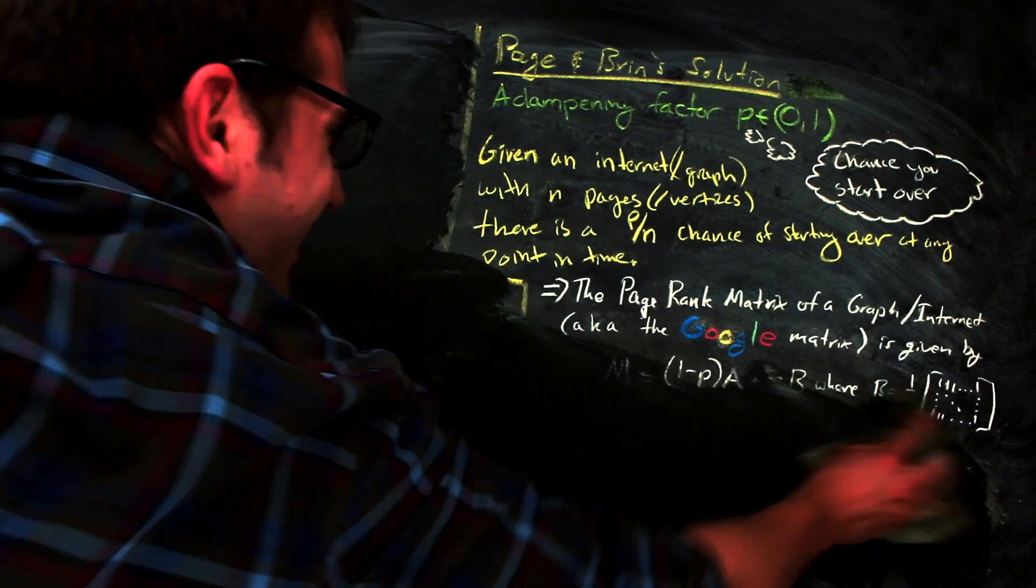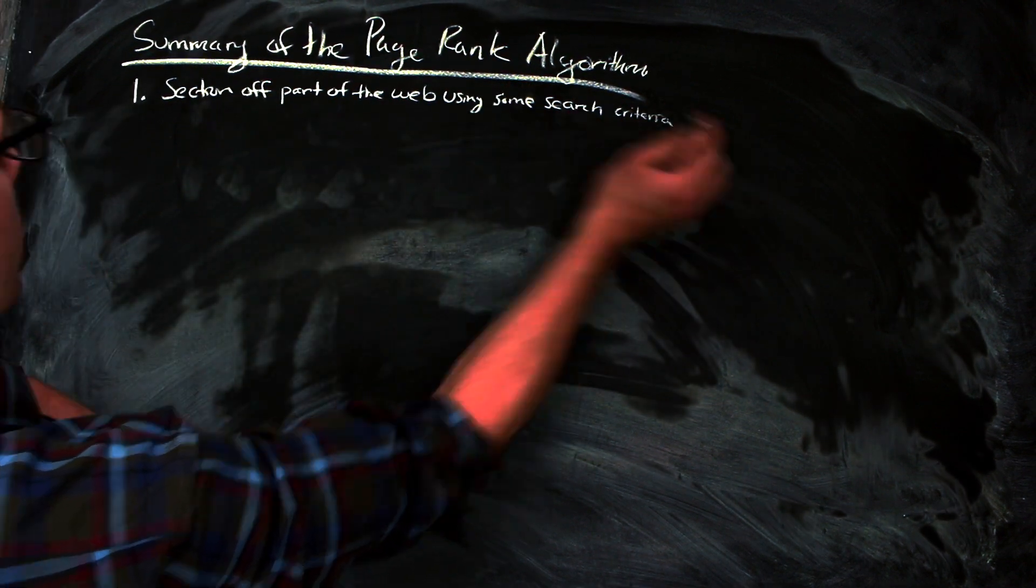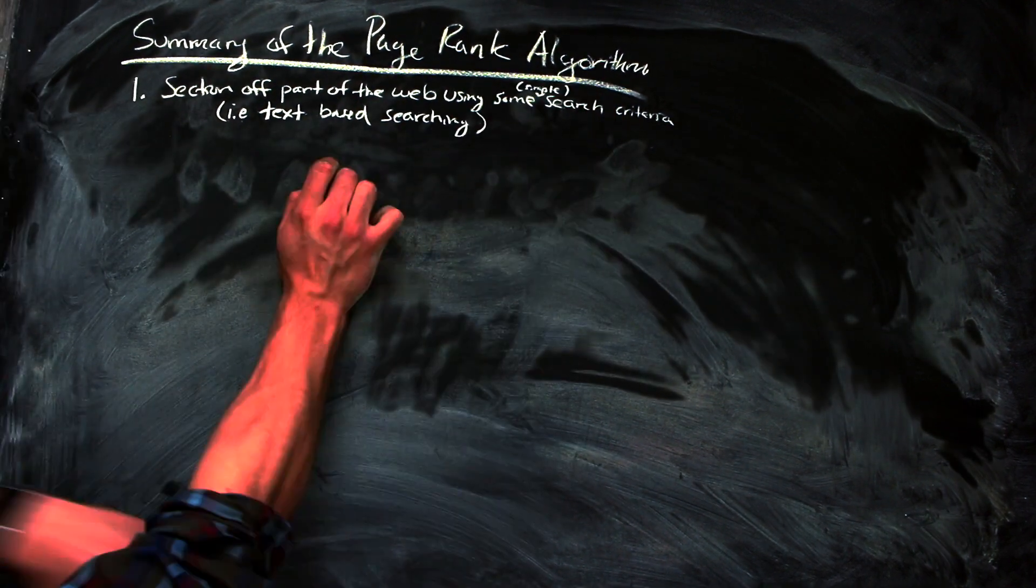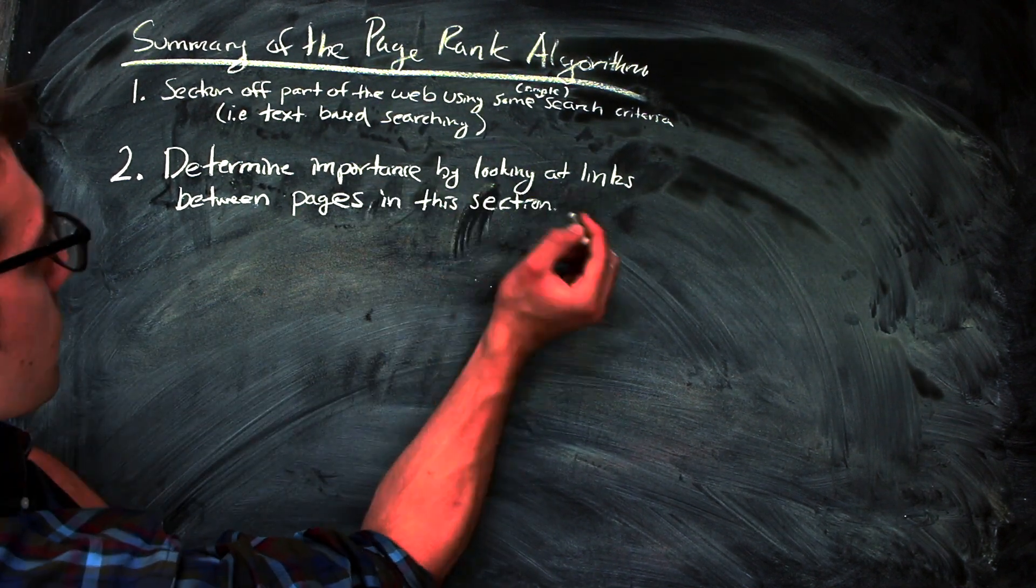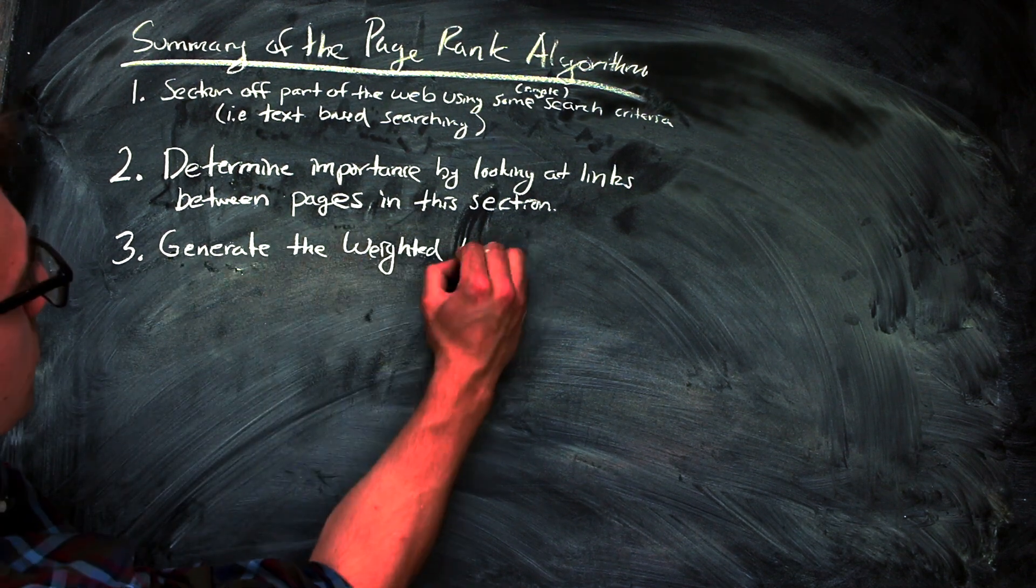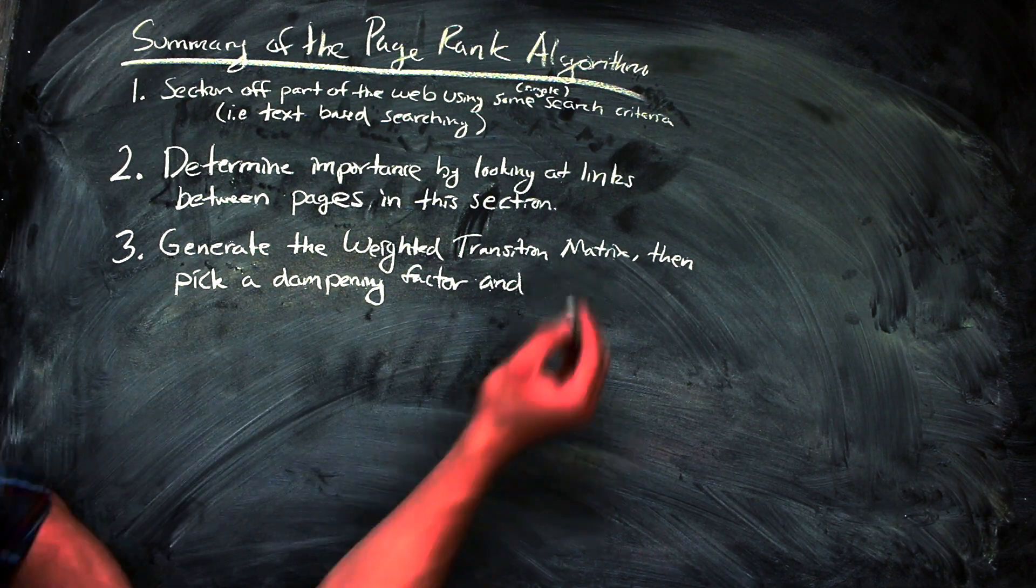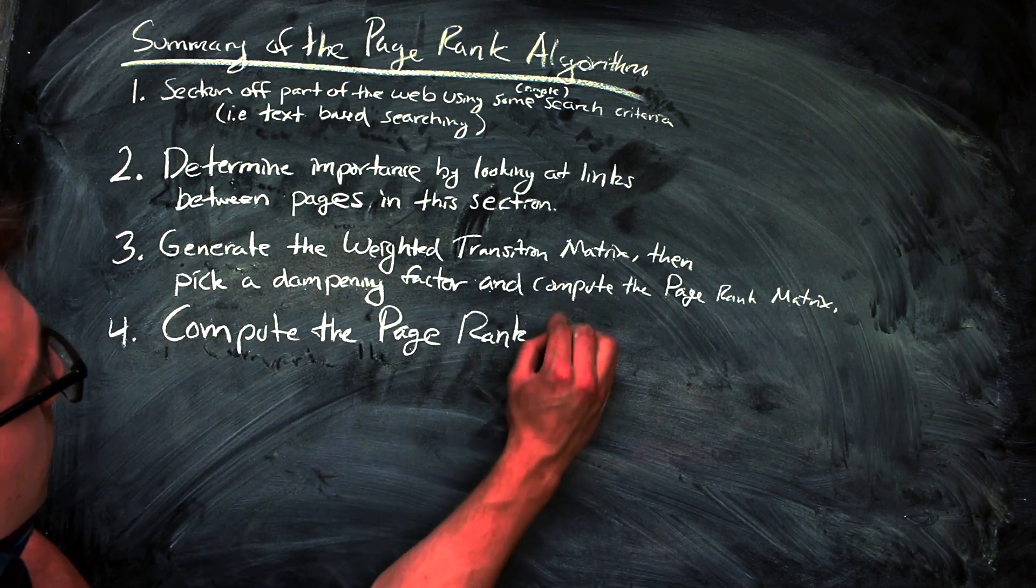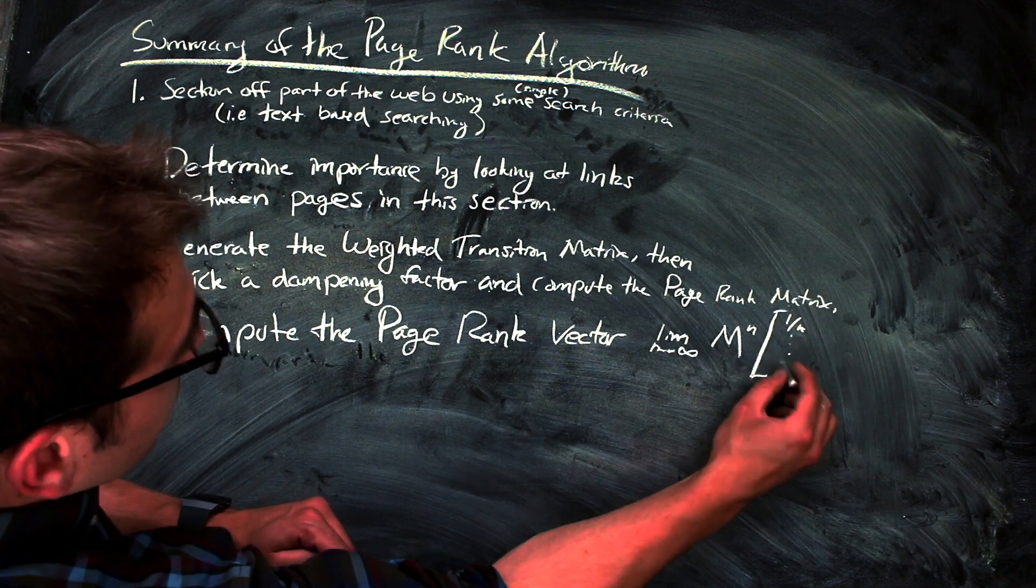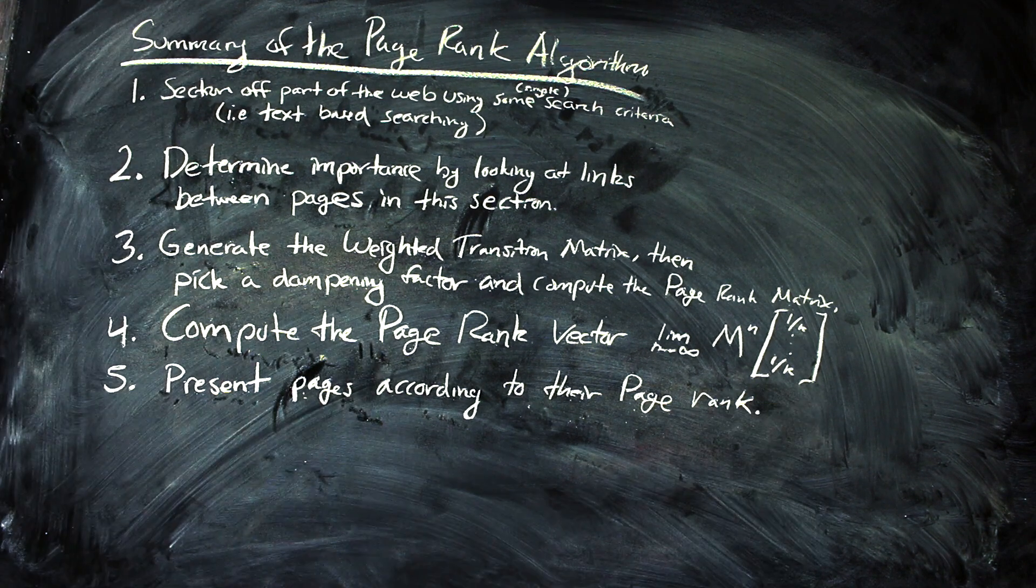So now that we have the page rank matrix and we know what the page rank vector is, we can go ahead and summarize the algorithm as follows. First, you section off part of the internet using some basic search method like frequency of a keyword. Second, you assign an importance to each of these pages by looking at the links between them in your query. Third, generate a weighted transition matrix for the graph that is weighted by importance, and then using that matrix and picking a dampening factor, you can make a page rank matrix. Assuming that there are n pages in the search query, you can compute the following limit to get the page rank vector, and then you just need to present the pages in the order of their page rank.